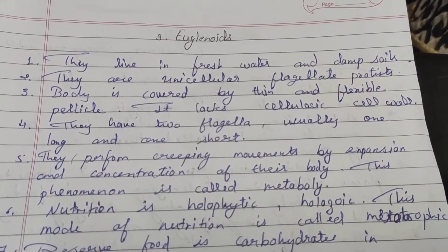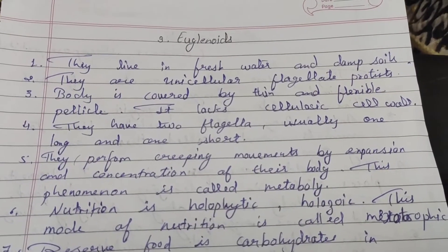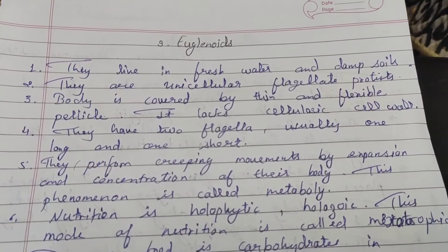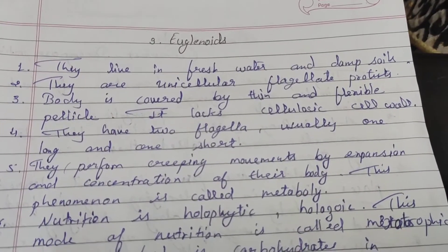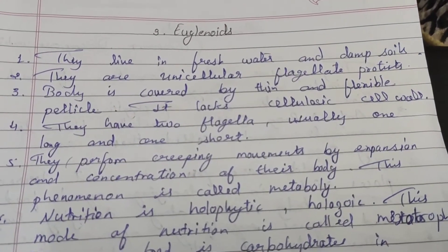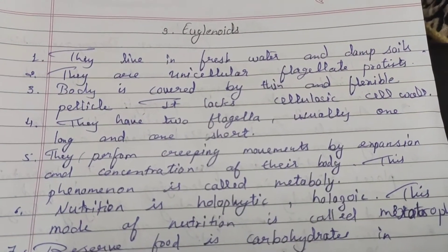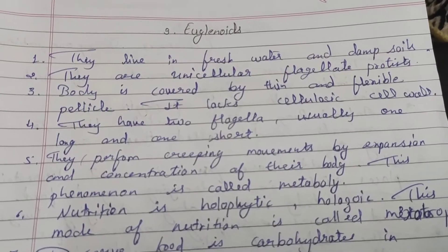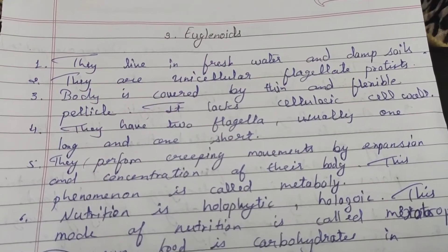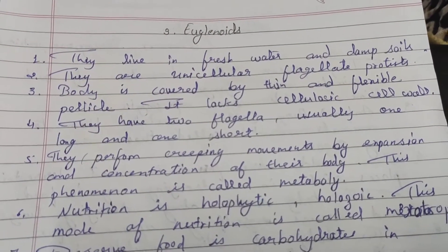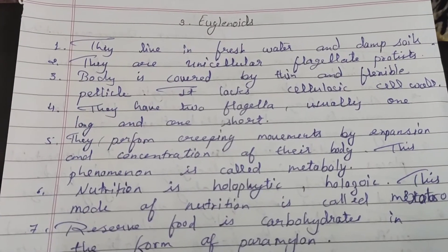Euglenoids are unicellular flagellate protists. They are covered with a thin and flexible pellicle. If we talk about the cellulosic cell wall, they are absent. They have 2 flagella.